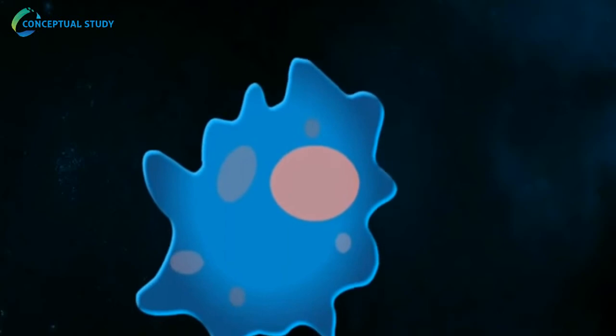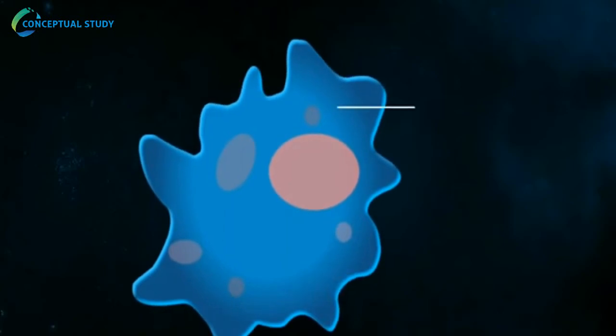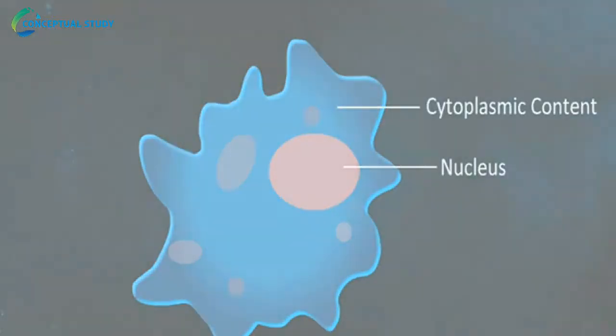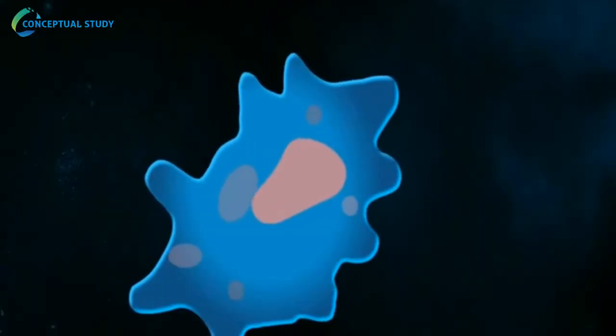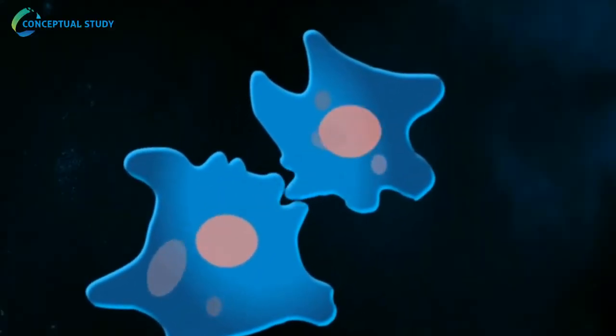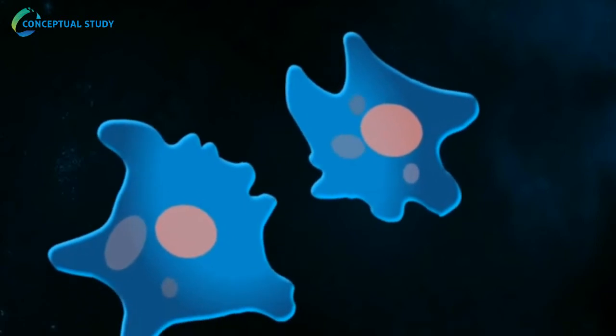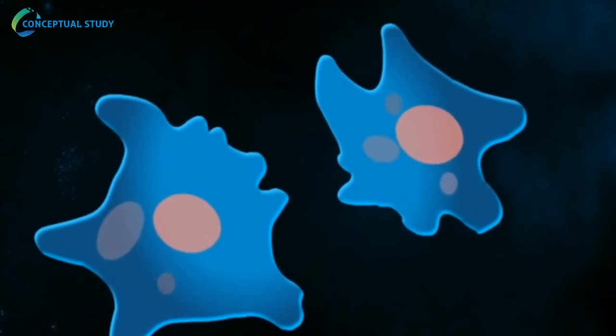Binary fission in amoeba is division of parental body into two nearly equal daughter cells during favorable conditions. In this method, the karyokinesis is followed by cytokinesis. Daughters feed, grow and repeat the process.